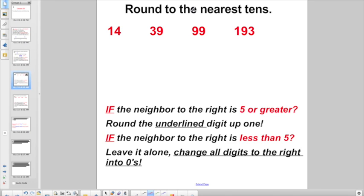So here it's saying, round to the nearest 10s. Let's start here with 14. Which digit is in the 10 spot? That's the 1. And then we're going to look to the neighbor to the right. If it's 5 or greater, we're going to round the underlined digit up 1. If the neighbor to the right is less than 5, leave it alone. Is the neighbor to the right less than 5? Yes, he is. So keep your 1 and fill in everything to the right. 14 is closest to 10.